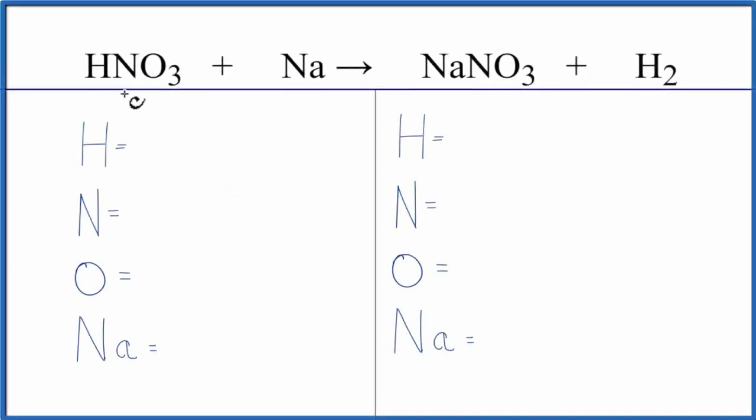To balance this equation, HNO3 plus Na, let's add the atoms up on each side of the equation. We have one hydrogen, one nitrogen, three oxygens, and one sodium.